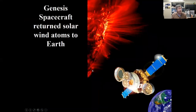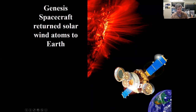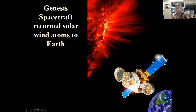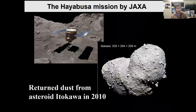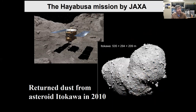I'll move on to discuss the Genesis spacecraft, which returned atoms from the sun — from the solar wind. It traveled out to an Earth-Sun Lagrangian point and soaked up rays for several years. It had trays of different types of materials — mostly silica wafers, but also gold and sapphire and other things — capturing atoms from the solar wind. The goal was to find out what the bulk composition of the sun is, which really isn't very well known at all. Those samples are also here in the building.